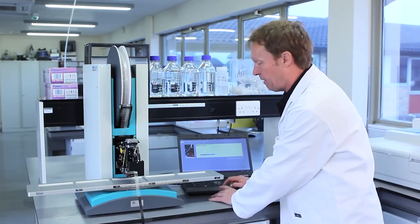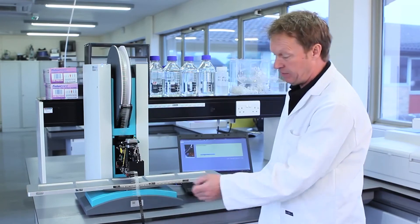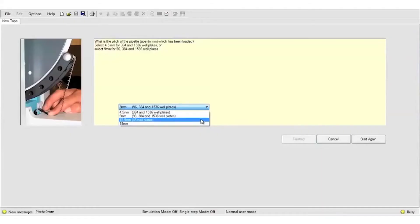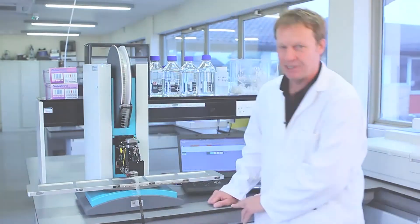This is where you choose the type of tape you're using because the mosquito can either use 9mm or 4.5mm. So we're using 9mm tape here. Finished. And that's how quick and easy it is to change the tape.